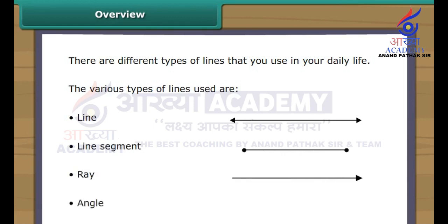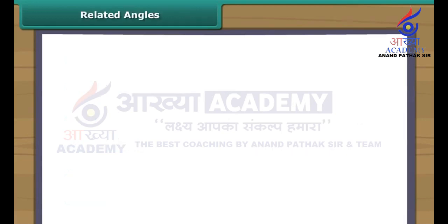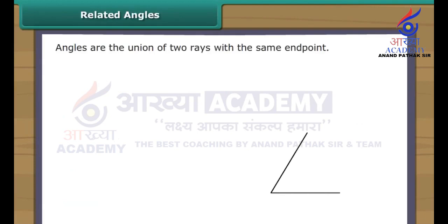Angle: An angle is created with two rays having the same starting point. The starting point is called the vertex and the rays are called the sides of the angle. An angle is defined as the union of two rays that have the same end point. The sides of the angles are the two rays, while the vertex is the common end point.